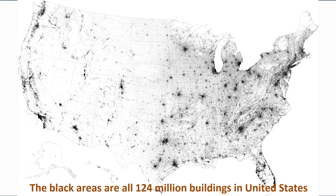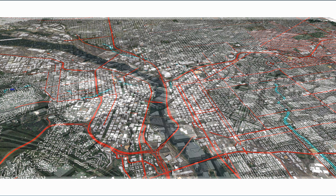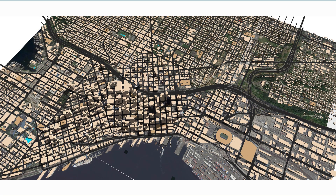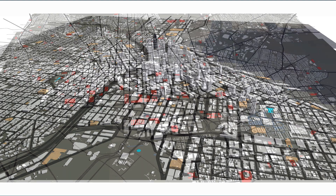Our biggest new feature is we now have over 124 million building footprints available for the entire United States. With our previous version of Placemaker, we were using OpenStreetMap data, and there's a great set of buildings that come with it, but not universal coverage. Now with the U.S. building set we have access to, courtesy of Microsoft, we have all the building volumes for the entire United States.